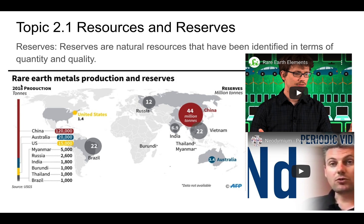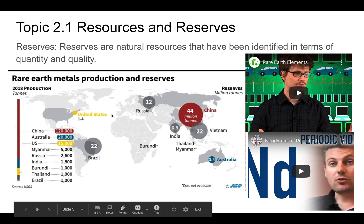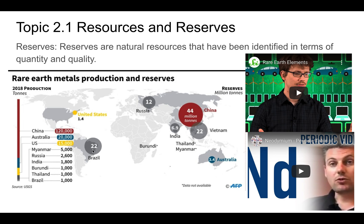An interesting example is rare earth metals, which are super important to electronics. One example is neodymium, which is used in magnets — anytime you have an electric motor, you're going to use neodymium magnets. If you look at where these reserves are, you can see that China has a huge proven reserve of these. Australia is the next biggest, then the US, followed by other countries with significant rare earth metal production. It's a reserve that is very important for the current economy.